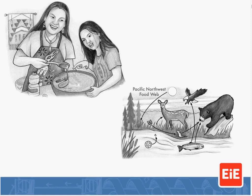Taya happens to know an environmental engineer named Thomas, who is working on the reservation helping with the oil spill cleanup effort. He tells Taya about different technologies engineers use to clean up oil spills — preventing the oil from spreading and removing it from the water. Taya and her mother then work in their kitchen making a mini model oil spill and test different materials to see which work best for cleaning up oil, either removing it from water or containing it.